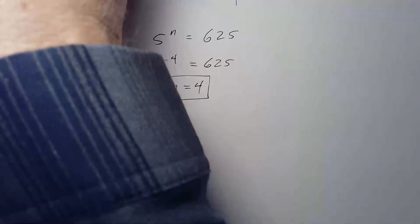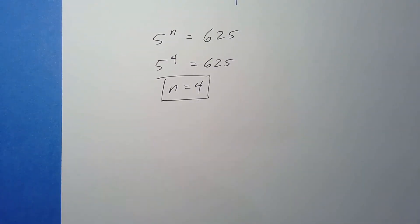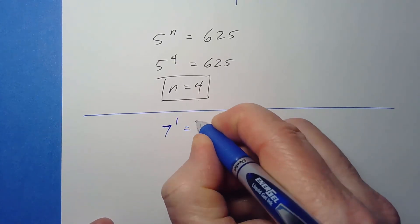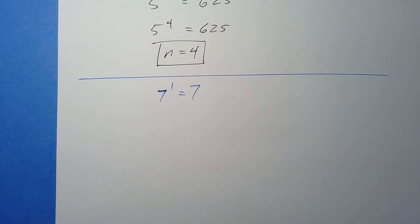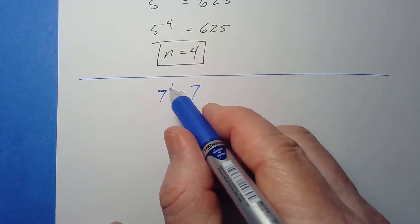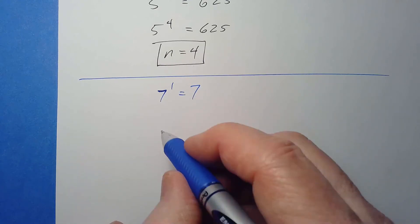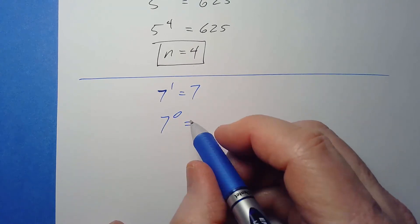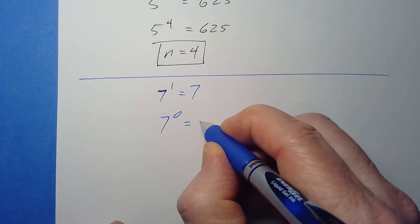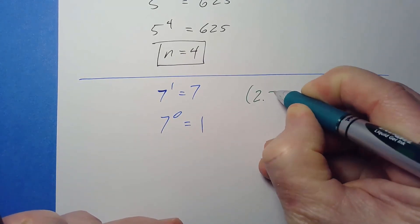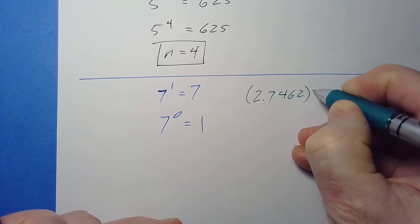Now let's talk about exponents of one and zero. An exponent of one is straightforward — seven to the first is just seven. If there's no exponent written, it basically means it's to the first power. Seven to the zero, which we'll explain more in a later lesson, equals one. In fact, anything to the zero power equals one — that works for any number, like 2.7462 to the zero power, which also equals one.